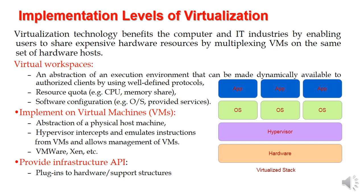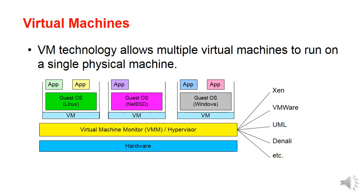VMware and Xen can be used to implement it. They provide infrastructure API, plugins to hardware and support structure. A Virtual Machine is a technology that allows multiple virtual machines to run on a single physical machine.